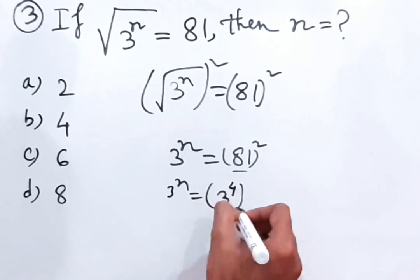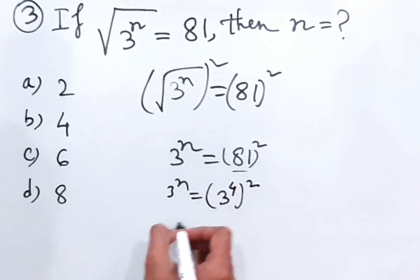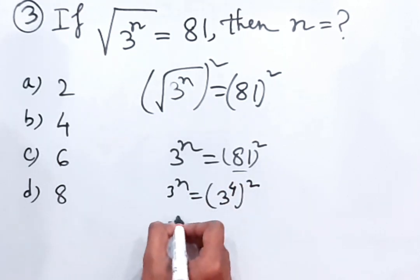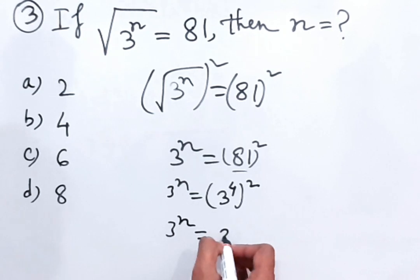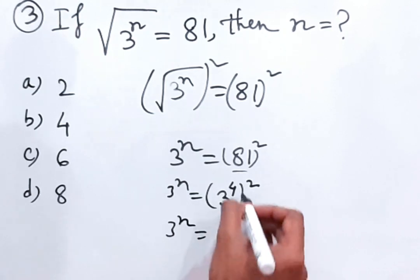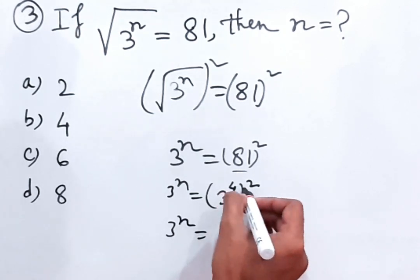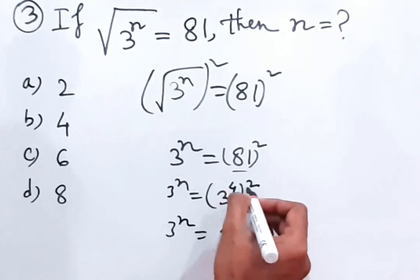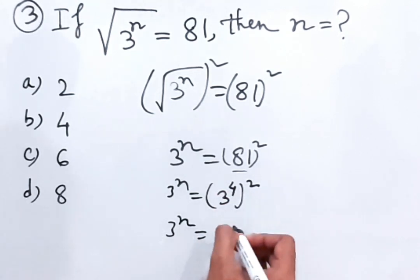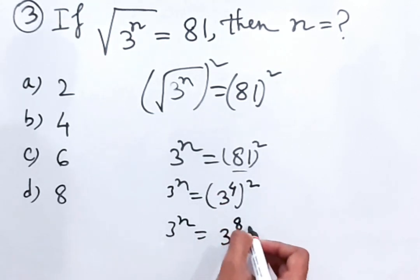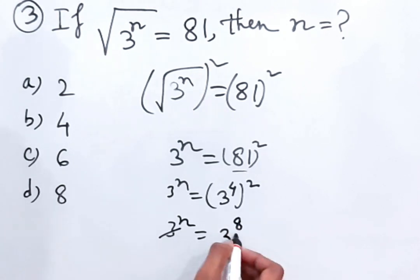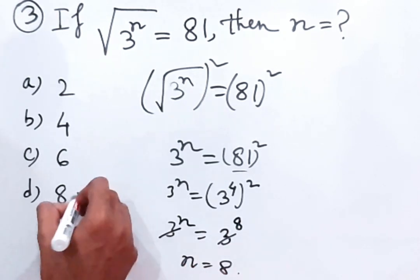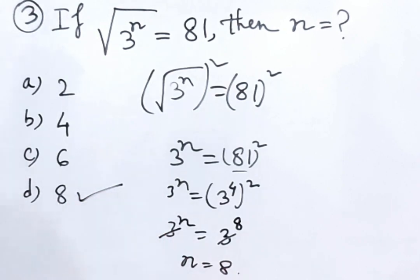So 3^n = (3^4)², which gives 3^n = 3^8 by multiplying 4 and 2. We can cancel the base 3 on both sides, therefore n = 8. This is the answer.